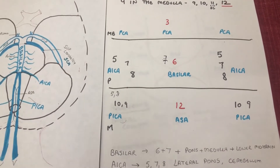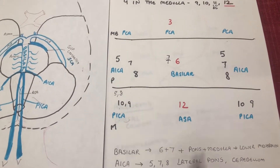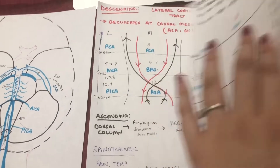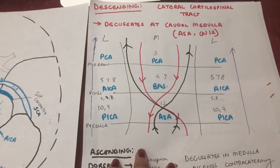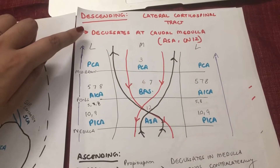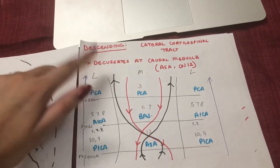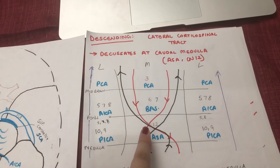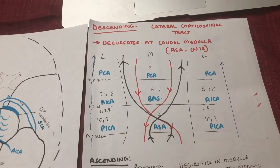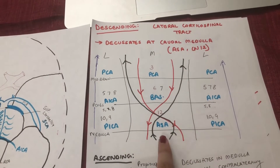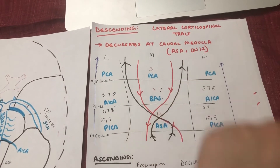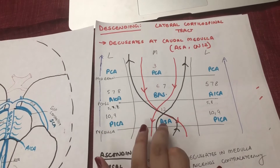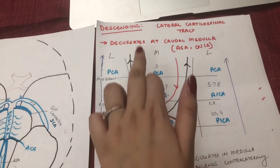Before we do more questions, we need to add one more important thing to the chart: the tracts. We have one descending tract and two ascending tracts. The descending lateral corticospinal tract comes down medially and decussates at the caudal medulla — which corresponds to the ASA and cranial nerve 12. So an ASA lesion affects the medial medulla, the hypoglossal nerve, and the descending corticospinal tract.